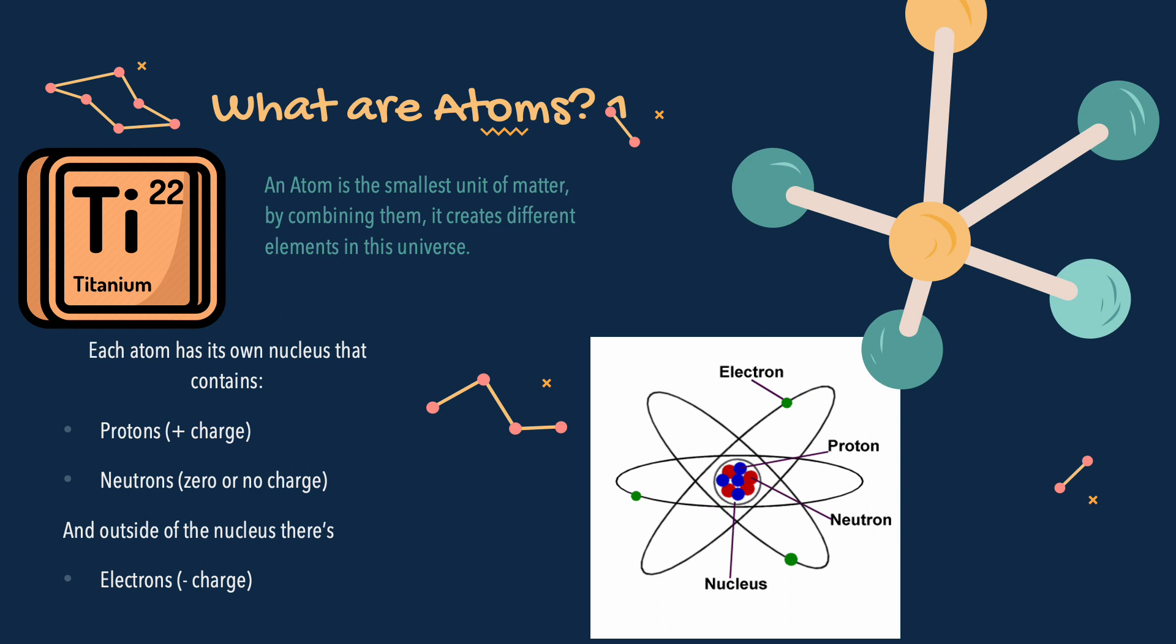What are atoms? An atom is the smallest unit of matter. By combining them, it creates different elements in this universe. Each atom has its own nucleus that contains protons and neutrons, and outside of the nucleus there's electrons.